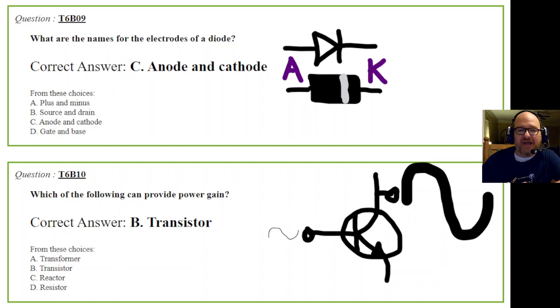Question 9: What are the names for the electrodes of a diode? A diode only has two - anode and cathode. We don't call them plus and minus, or source and drain. Source, drain, and gate are for field effect transistors. Base is for a transistor. The correct answer is anode and cathode. Anode is A, and cathode is K for some reason.